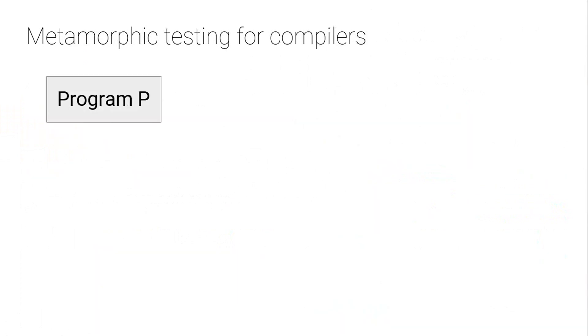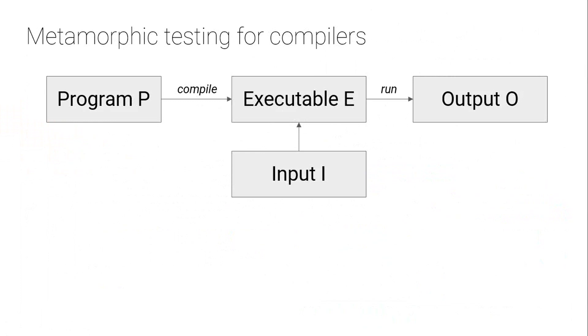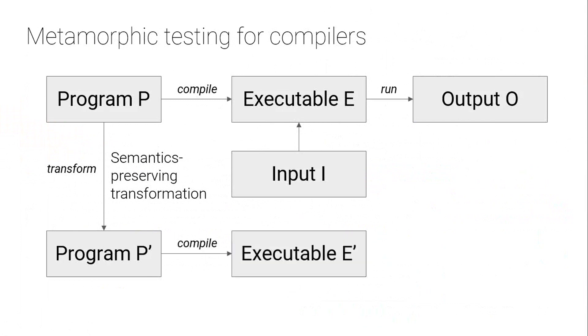So now let me tell you briefly about how we might apply metamorphic testing to compilers. Let's suppose you've got a program P in a programming language, and assume that it's deterministic and well-defined. If you compile it, you get an executable E. And if you run that executable on some input, you get an output O. Well, if you could apply a semantics-preserving transformation to the program, for example, unroll a loop, or wrap a piece of code in if true, or do some sort of transformation to the code that would not change its semantics, then if you compile the resulting program P prime, you'll get a different executable E prime. Because we've changed the syntax of this program, we'll get different object code generated. But if we really have made the transformation be semantics-preserving, then if we run the executable on same input, we should get the same output. And if we don't, then there's a bug in the compiler or the VM, or maybe even the underlying hardware.